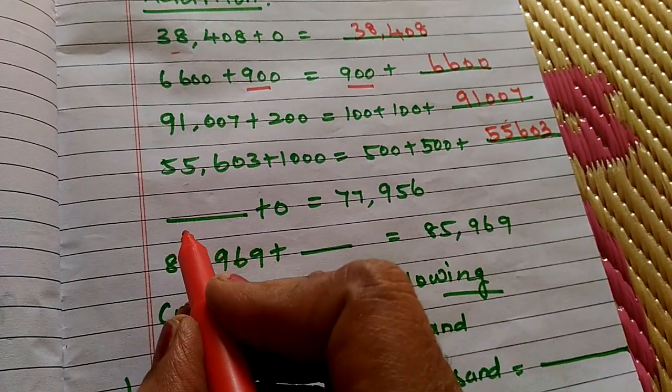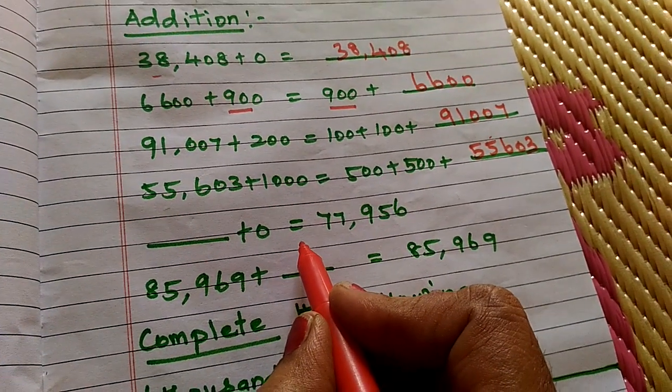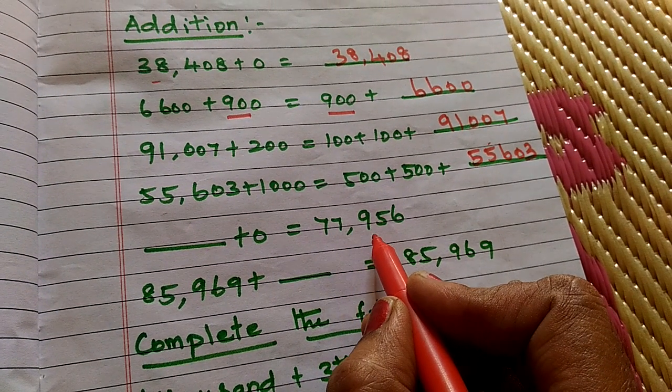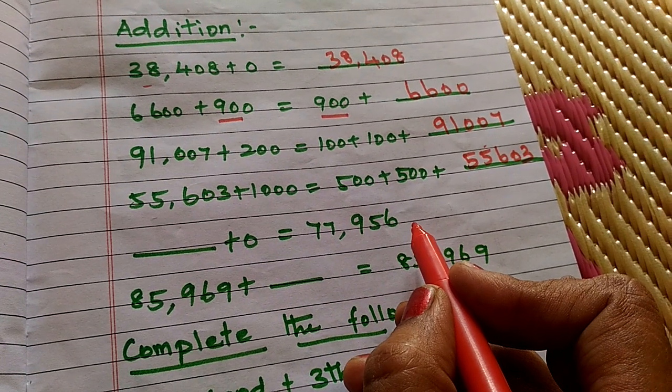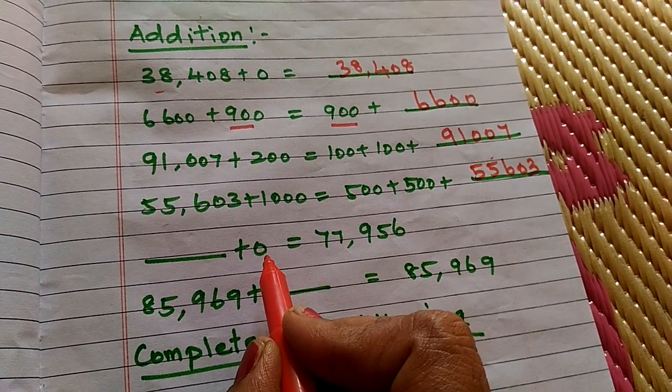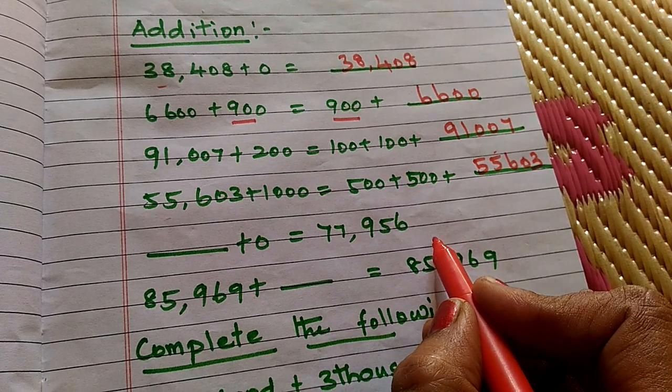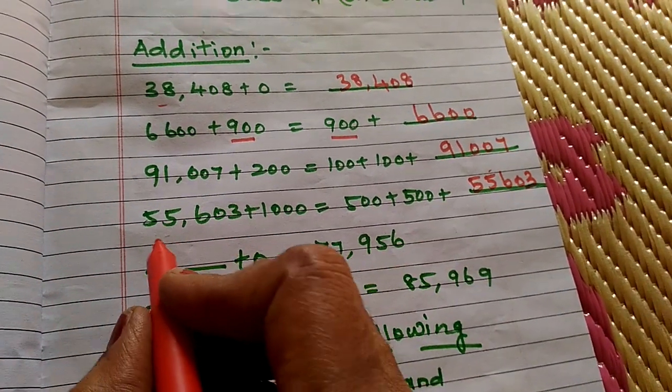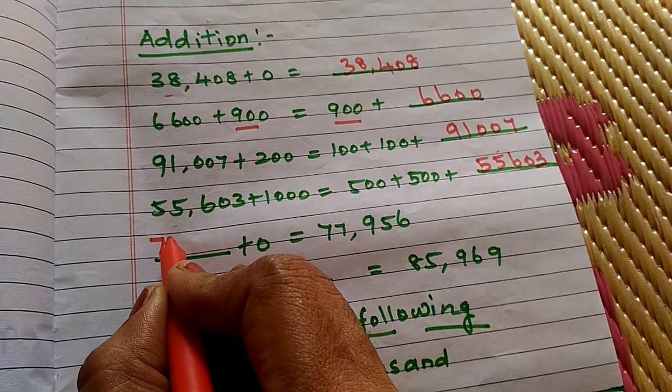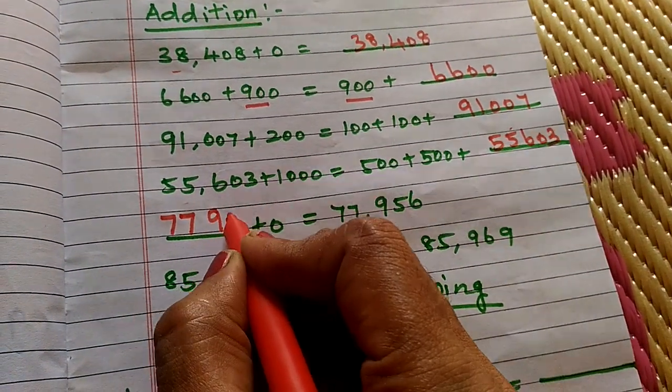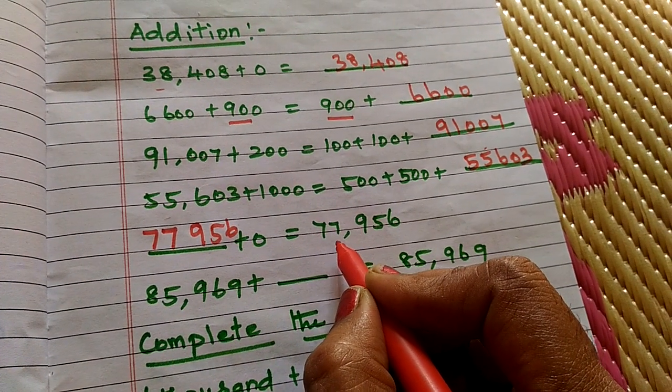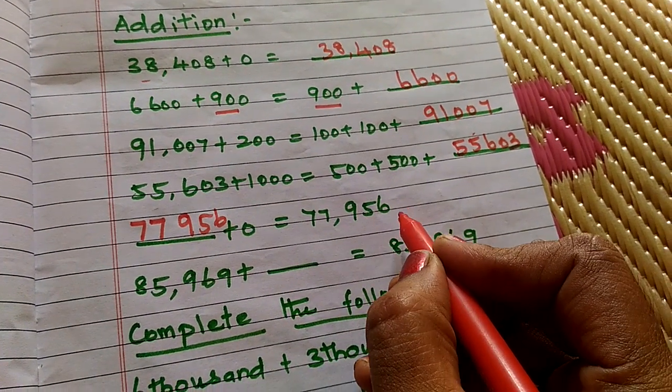Next, dash plus 0 equals 77,956. If you add any number to 0, you get same number. So, 77,956 plus 0 equals 77,956.